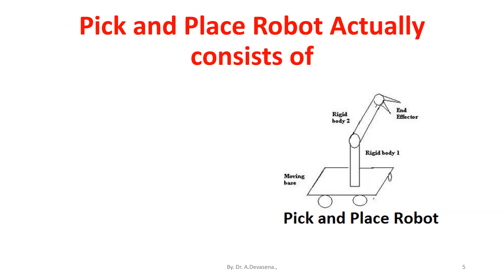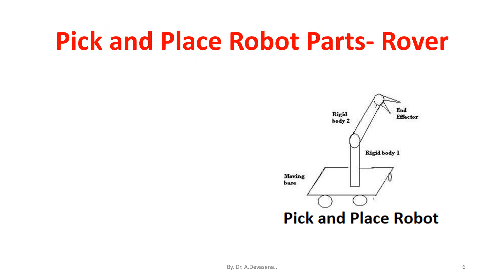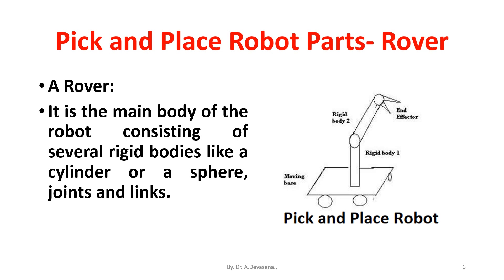A pick and place robot actually consists of a rover, an end effector, actuators, sensors and a controller. A rover is the main body of the robot consisting of several rigid bodies like a cylinder or a sphere, joints and links. It is also known as a manipulator.